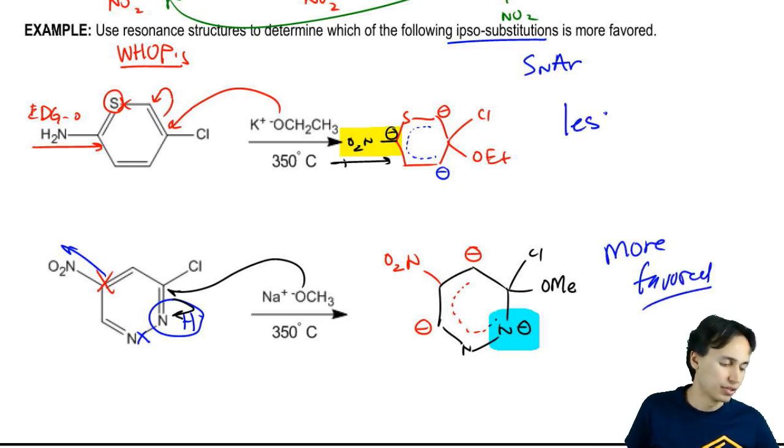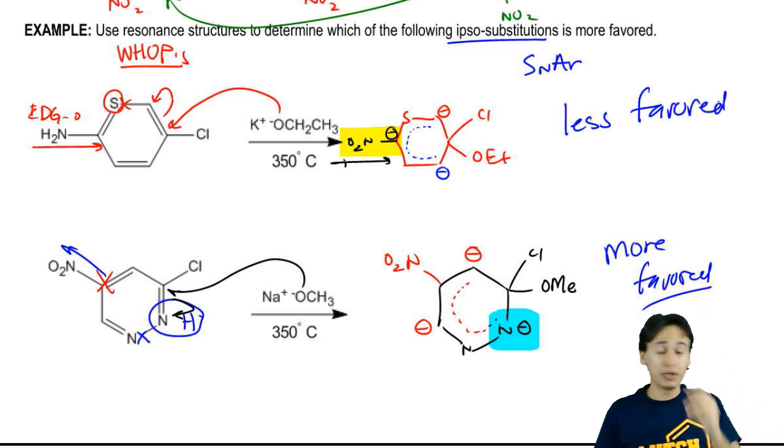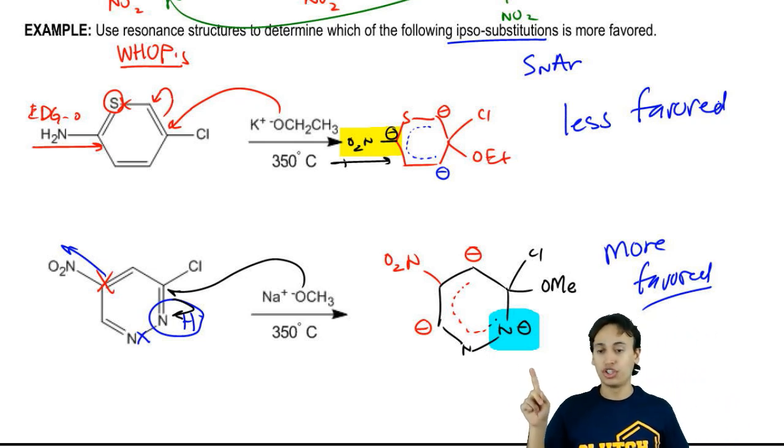This one is going to be less favored. In terms of favorability, you could actually relate that to temperature, meaning that this reaction could occur possibly at a lower temperature than 350. The one above may need more than 350 because it's got that donating group that's destabilizing it. Make sense?